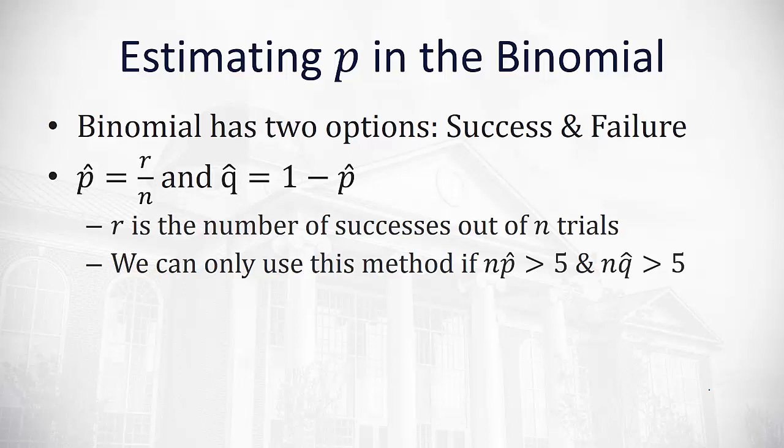If p is the proportion of successes, then q is the proportion of failures, 1 minus p.